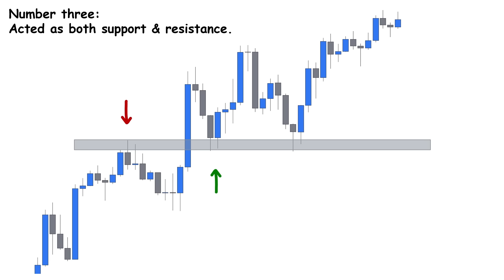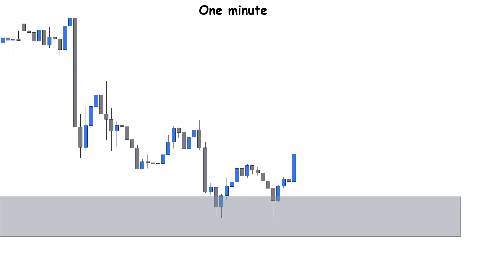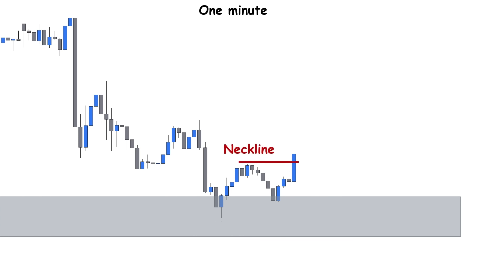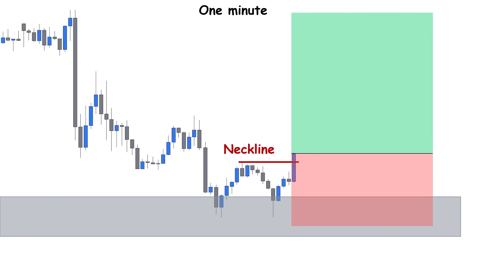After marking these optimal trading zones on the chart, we wait for the price to enter these areas and drop down to the one-minute chart to look for confirmation and entry. In the one-minute chart, I'm looking for a very specific chart reversal pattern called the double bottom — an M-shaped reversal pattern that signals a possible reversal. It shows the sellers have failed to break below the market structure. This pattern completes when the price breaks and closes above the neckline. Our stop loss will be below the double bottom and we will target the next level of market structure in front of the price.